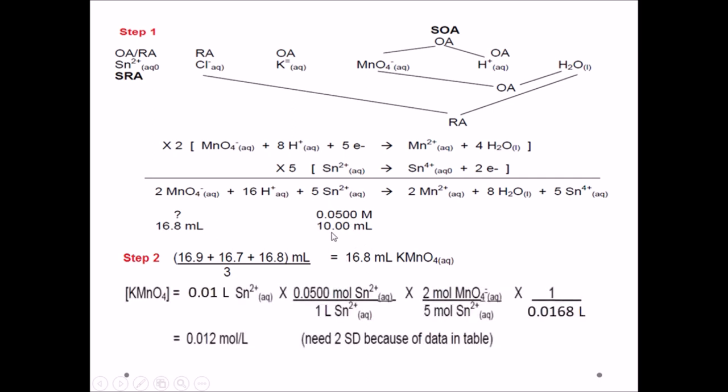We can now start our redox titration calculation. Remember, we always start with the substance for which we have both the volume and the concentration. We will start our calculation with 10 milliliters, which will be converted to liters. We will times it by the concentration of tin 2+ ions to get our answer into moles of tin 2+ ions. We can then use the molar ratio to find the moles of permanganate ions. Once we have our answer in moles of permanganate ions, we can divide it by the volume in liters of permanganate ions. This results in a concentration of potassium permanganate of 0.012 moles per liter. That will be two significant digits from the data table.